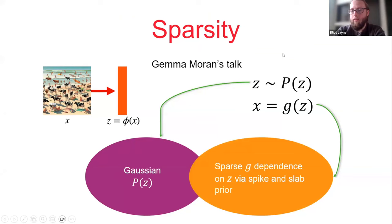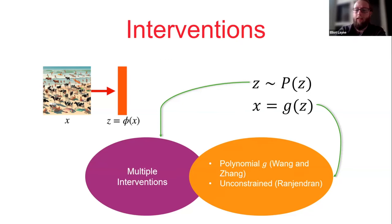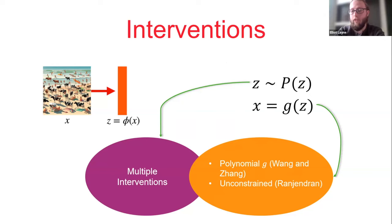Last week there was a talk by Gemma where the assumptions were mostly constrained to g — in particular, a sparse dependency between z and g with fairly mild assumptions on the distribution of z, just that they were Gaussian. Before that, we had a set of talks in the setting of multiple interventions observed on z, with trade-offs in the number of interventions: Guten's talk with an unconstrained g but a linear structural causal model, or a polynomial g from Njiaki Zhang's talk.